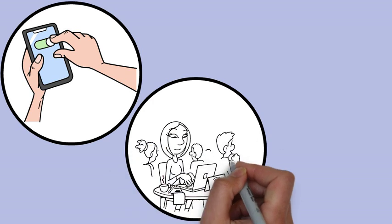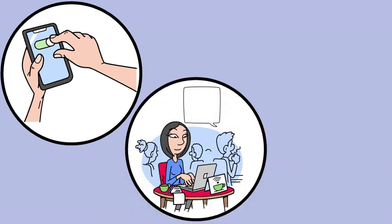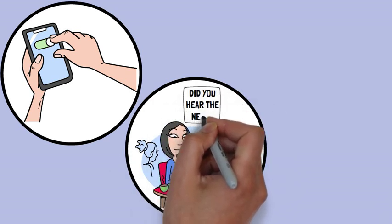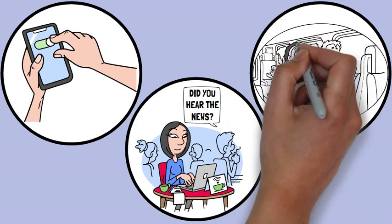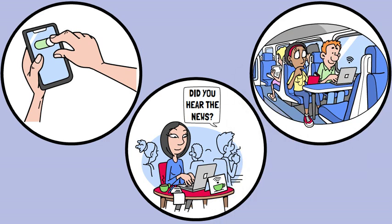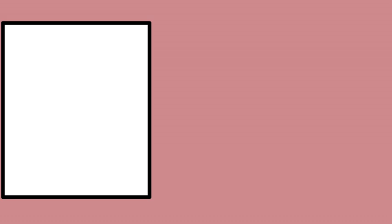In Treisman's model, the attenuator is like a dimmer switch for information — it reduces the intensity of information that isn't the focus of your attention, allowing important information to pass through more clearly. For example, if you are reading a book while the TV is on, the attenuator dims the TV sound so you can still hear important parts of the show if they are loud or significant, but it doesn't drown out the sound entirely.